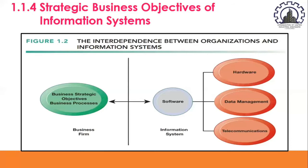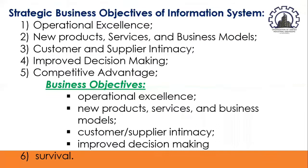What a business would like to do in five years often depends on what its systems will be able to do. Increasing market share, becoming the high-quality or low-cost producer, developing new products, and increasing employee productivity depend more and more on the kinds and quality of information systems in the organization. Business firms invest heavily in information systems to achieve six strategic business objectives: operational excellence; new products, services, and business models; customer and supplier intimacy; improved decision-making; competitive advantage; and survival.